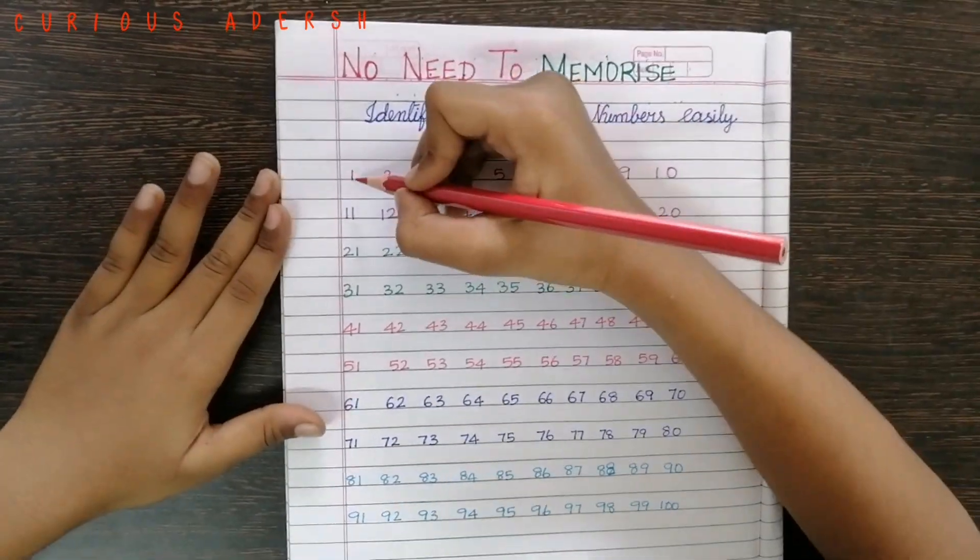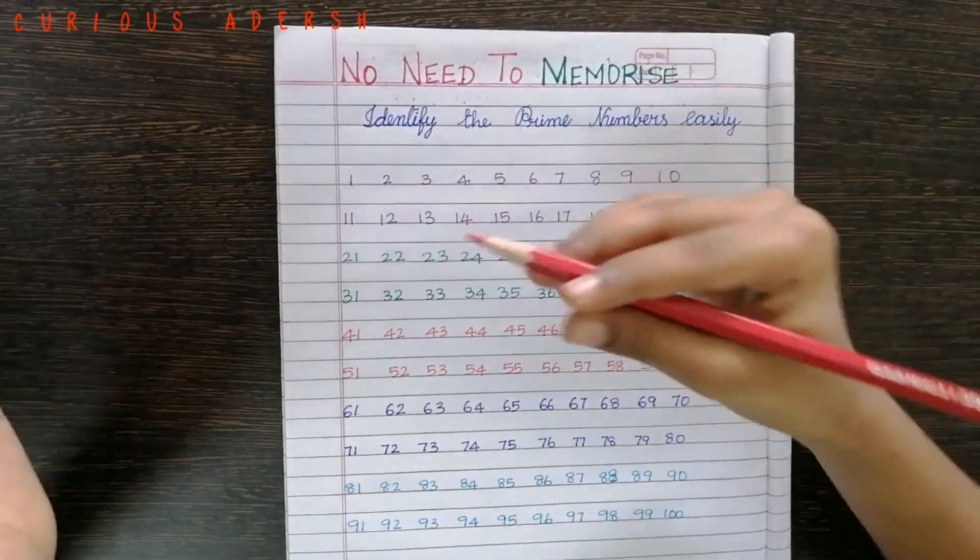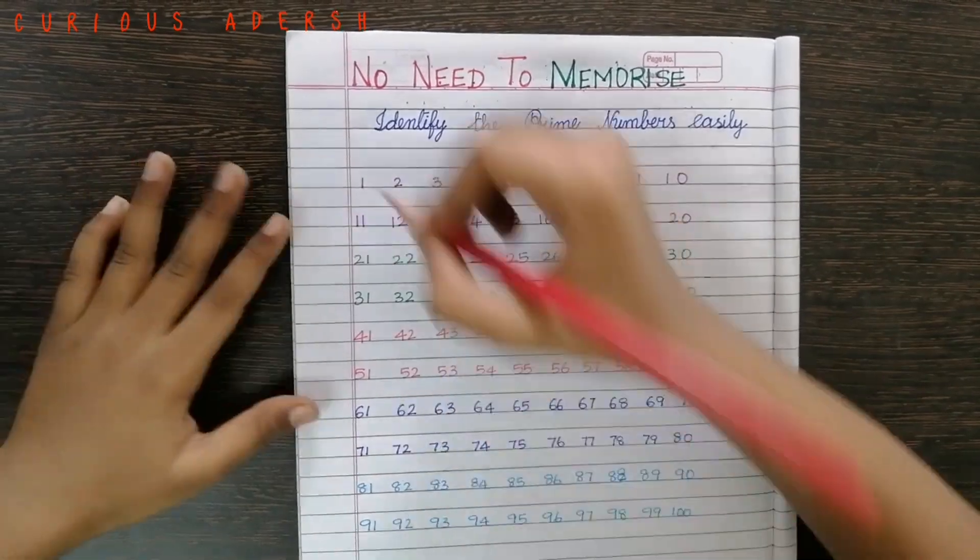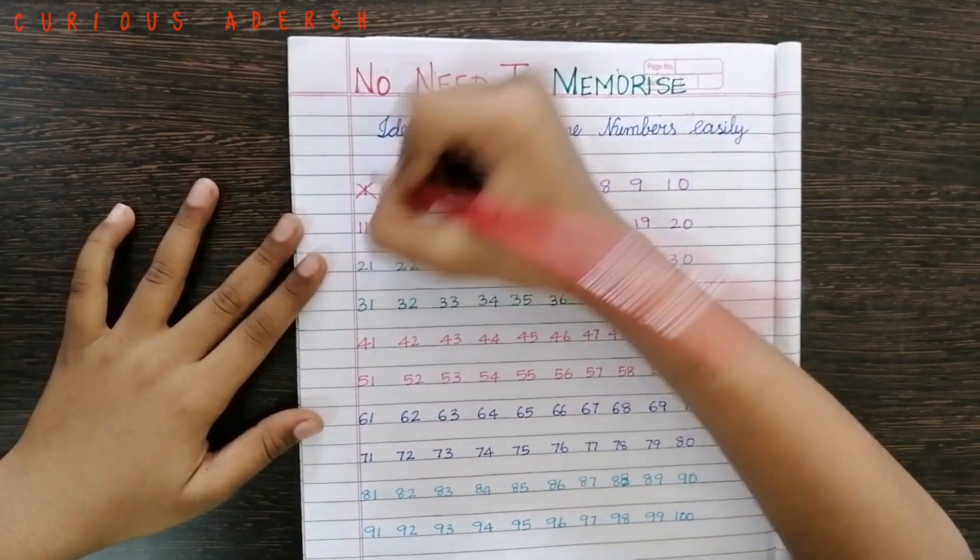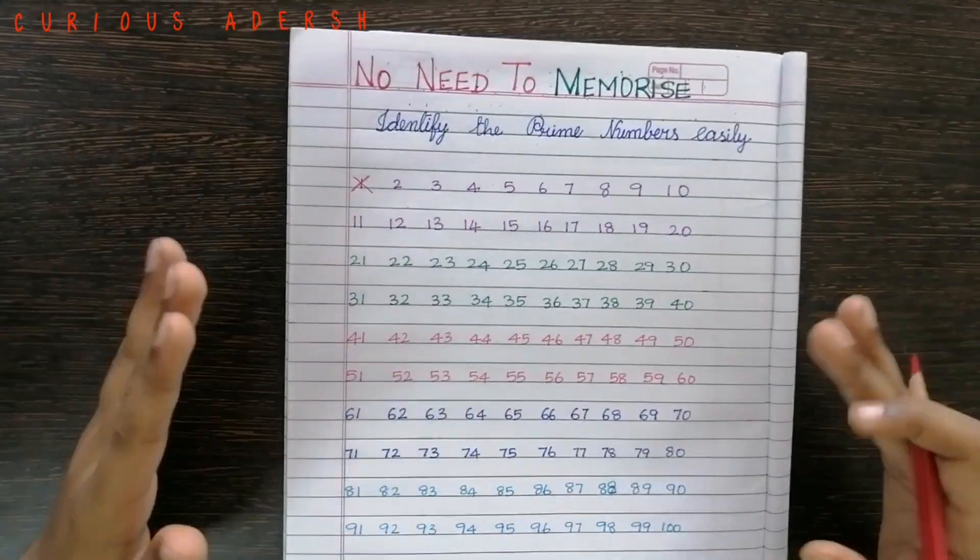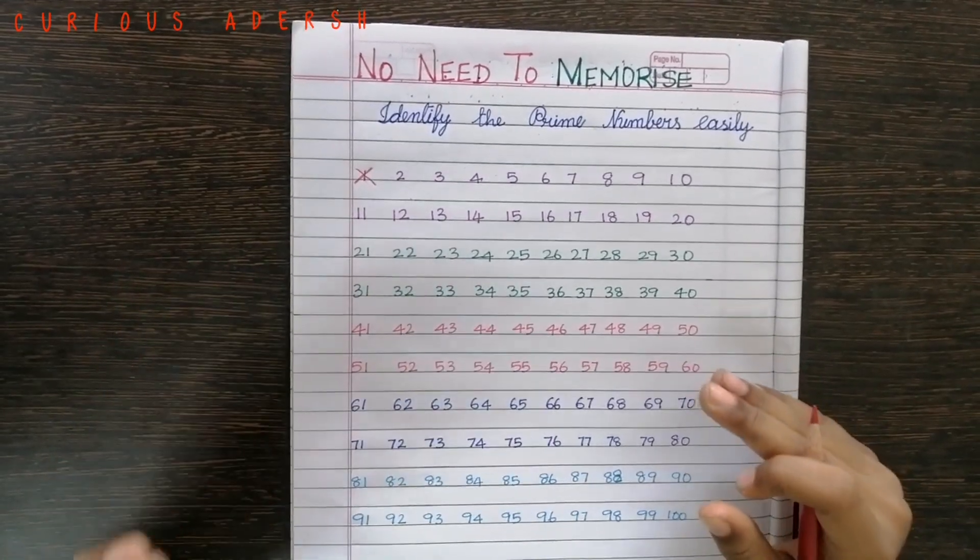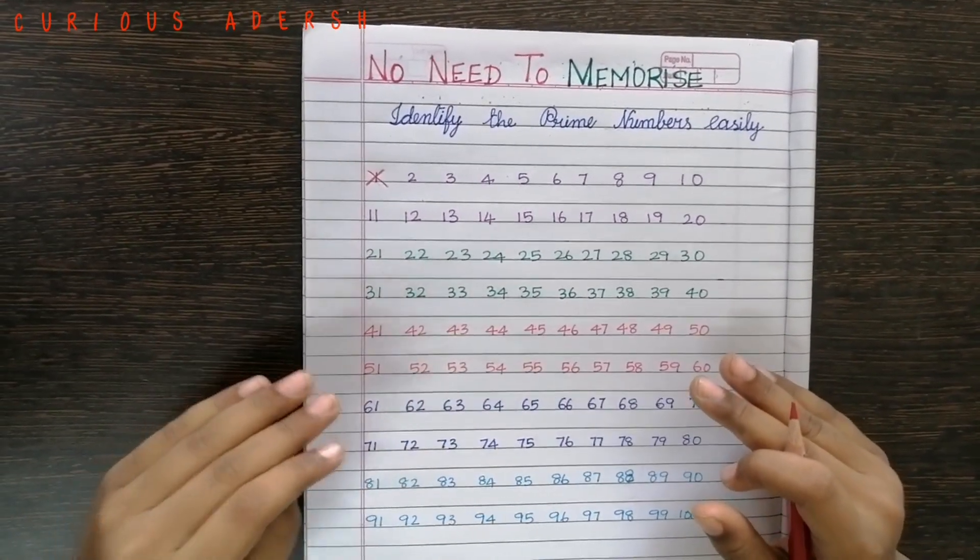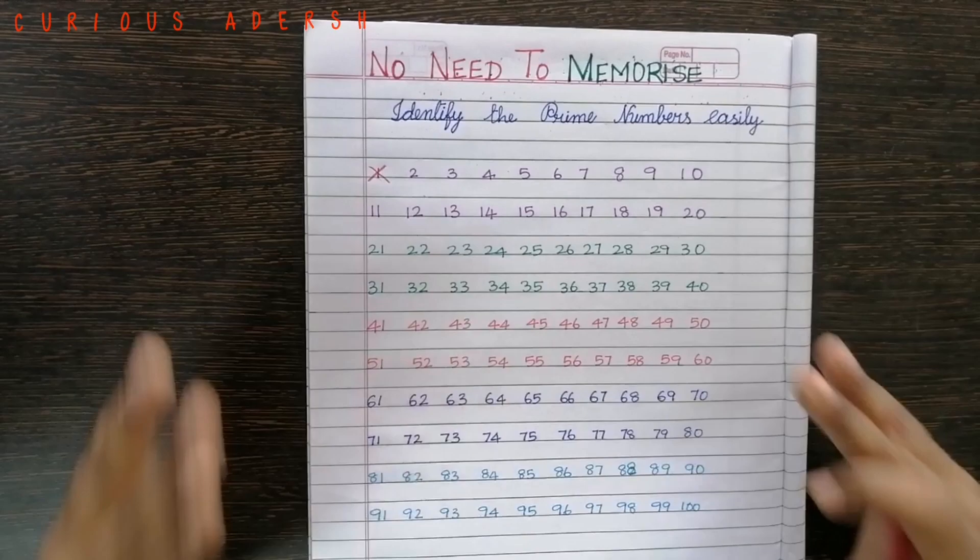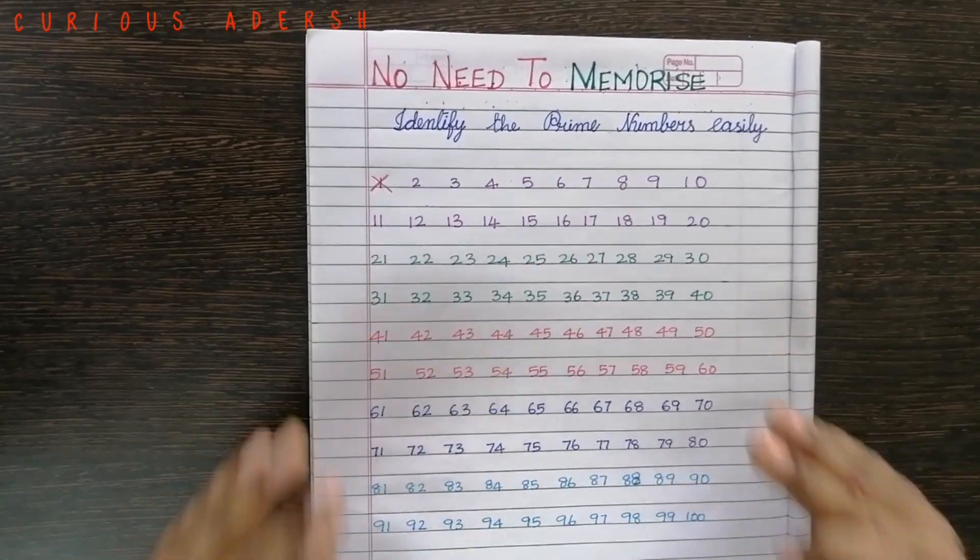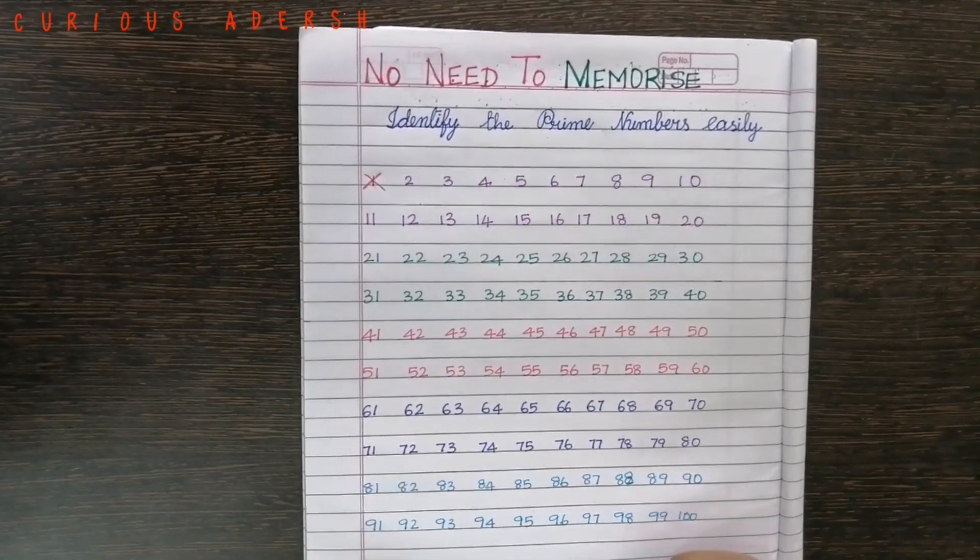Now we'll cross out 1 as it is neither a prime number nor a composite. Then we'll cross out all the even numbers except 2, as 2 is the only even prime number. Let's do it.